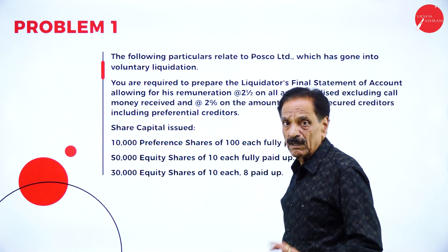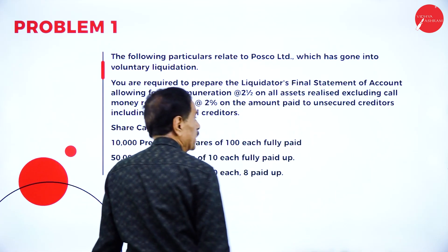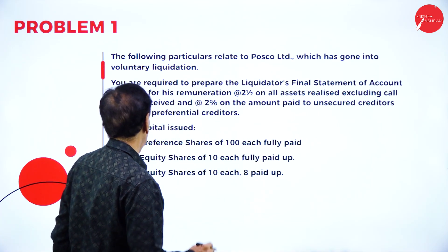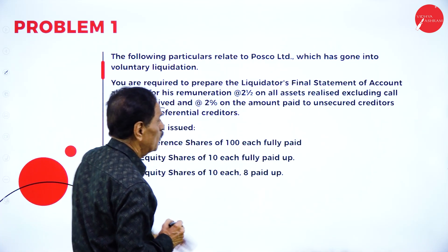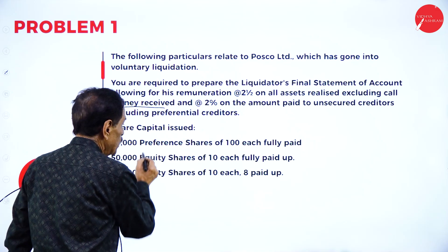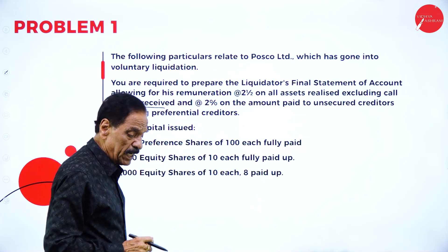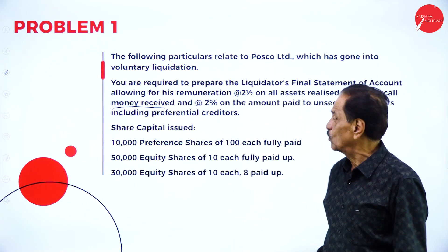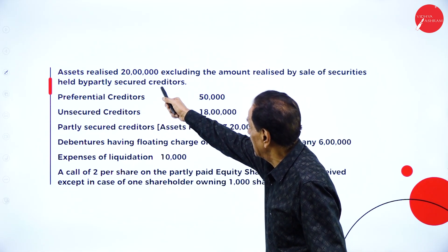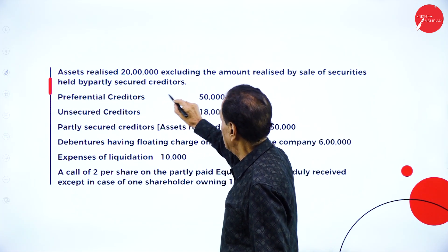Now we move on to Problem 1. The following particulars relate to Pasco, which goes into voluntary liquidation. You are required to prepare the Liquidator's Final Statement of Account, allowing remuneration of 2.5% on all assets realized excluding call money received, and 2% on the amount paid to unsecured creditors including preferential creditors. Share capital: 10,000 preference shares of Rs.100 each; 5,000 equity shares of Rs.10 each; and 30,000 equity shares of Rs.10 each, Rs.8 paid up — they still have to pay the balance of Rs.2. Assets realized at the time of liquidation amount to Rs.20 lakh, excluding the amount realized by sale of securities held by partly secured creditors.